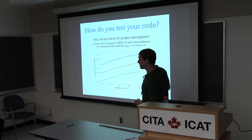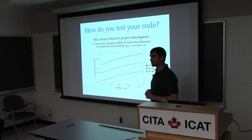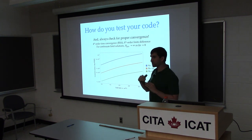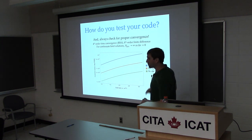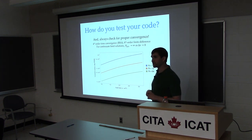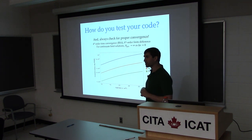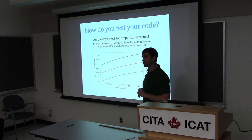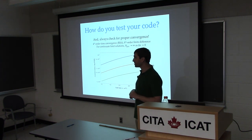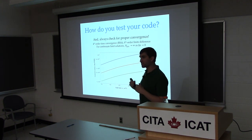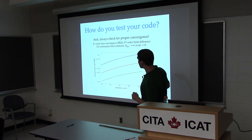For any numerical code, always check for proper convergence. When we wrote down our spatial derivatives we had to discretize spacetime. Our code does this to eighth order, and we should make sure that as we increase our sampling on the grid, our solution accuracy scales in this particular way. We can do the same thing with time-stepping — we use an RK4 integrator, and we check that as we take finer and finer time steps our solutions converge as they should.